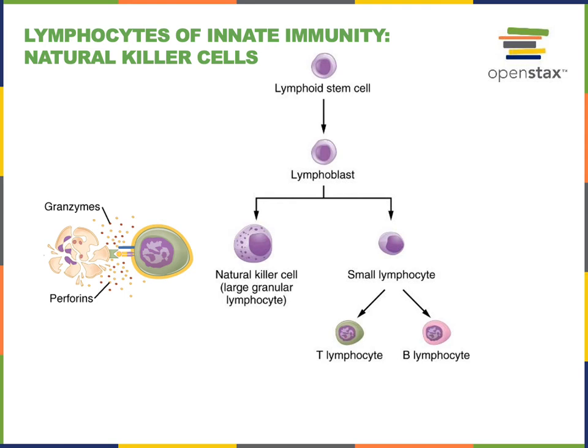Natural killer cells are fairly similar to T lymphocytes in that natural killer cells will stimulate apoptosis of virally infected cells. A specific type of T lymphocyte known as a cytotoxic T lymphocyte can also stimulate apoptosis of virally infected cells. The main difference is that a natural killer cell does not recognize a specific antigen associated with a specific virus.